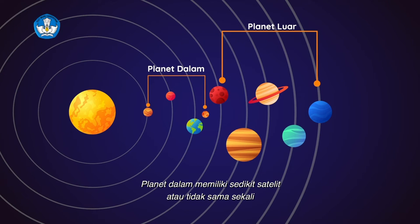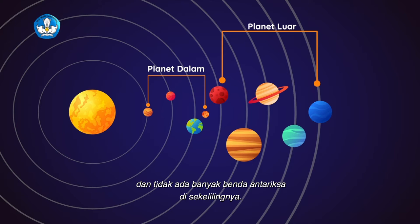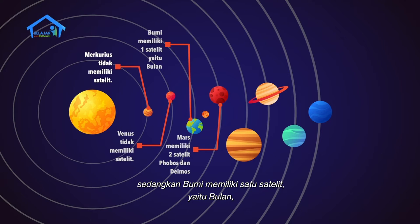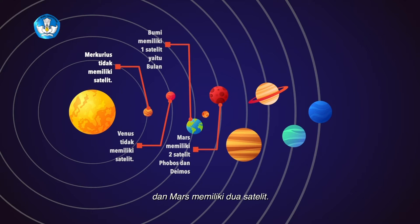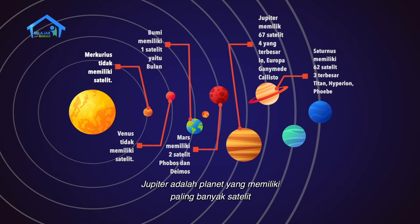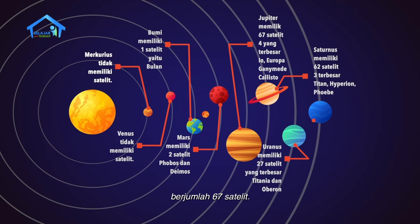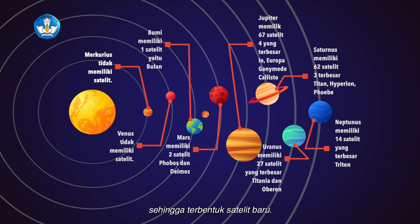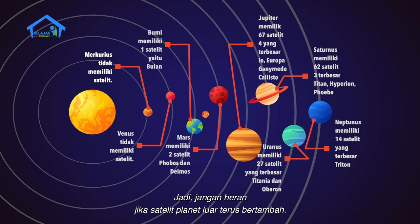Planet dalam memiliki sedikit satelit atau tidak sama sekali karena dekat dengan matahari, dan tidak ada banyak benda antariksa di sekelilingnya. Planet dalam yang tidak memiliki satelit adalah Merkurius dan Venus. Sedangkan bumi memiliki satu satelit, yaitu bulan, dan Mars memiliki dua satelit. Ini berbeda sekali dengan planet luar yang memiliki banyak satelit. Jupiter adalah planet yang memiliki paling banyak satelit, berjumlah 67 satelit. Planet luar memiliki kekuatan untuk menarik gas, debu, atau es di sekitarnya, sehingga terbentuk satelit baru. Jadi, jangan heran jika satelit planet luar terus bertambah.